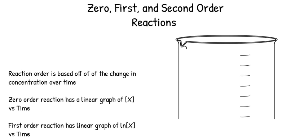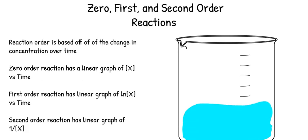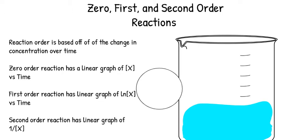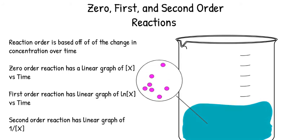Zero, First, and Second Order Reactions by Noelle Sheldon. Reaction order is based off of the change in concentration over time. A zero order reaction has a linear graph of concentration versus time. A first order reaction has a linear graph of natural log concentration versus time.